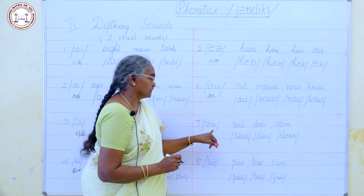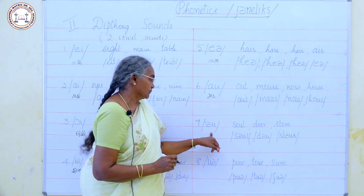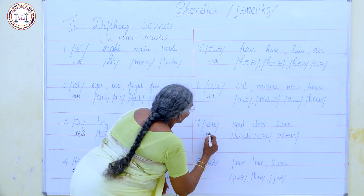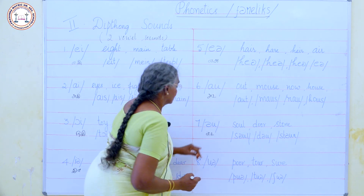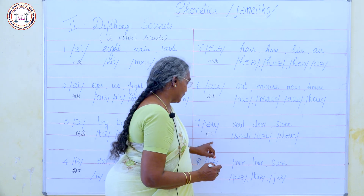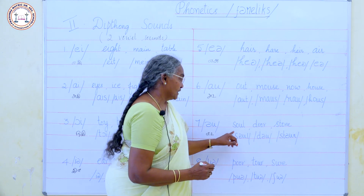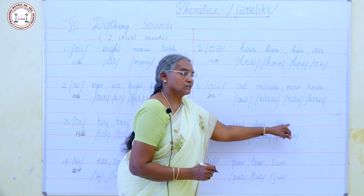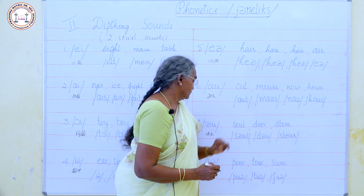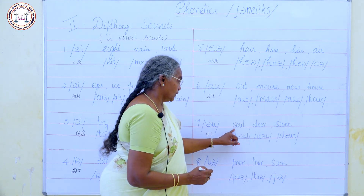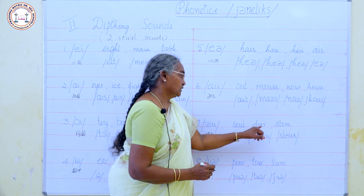Another diphthong sound is 'eə' — A plus A combined. Examples: hair, hare, hare — R is silent. These words have different spellings but the same sound. The sixth diphthong sound is 'aʊ' — A plus U combined. Examples: out, mouse, now, house — all have the 'aʊ' sound.